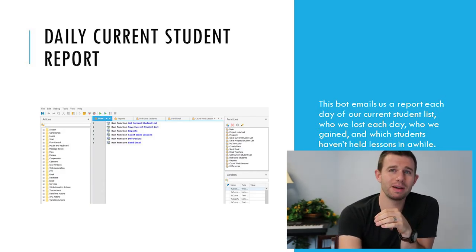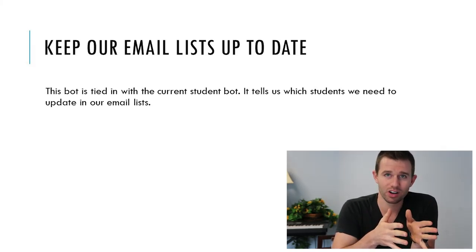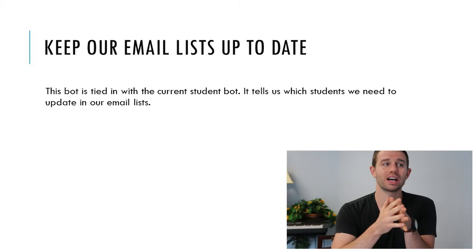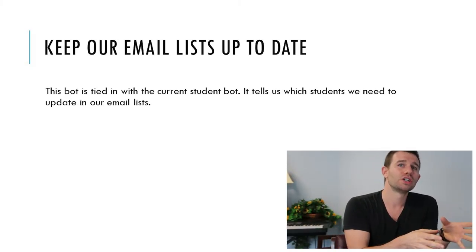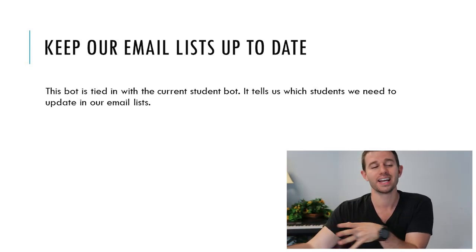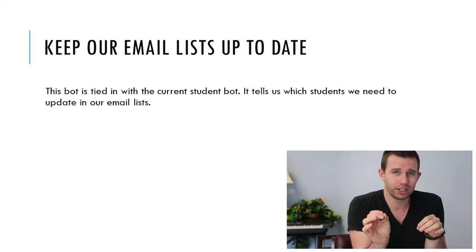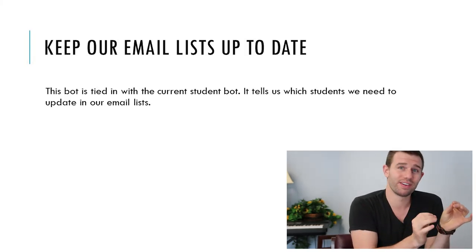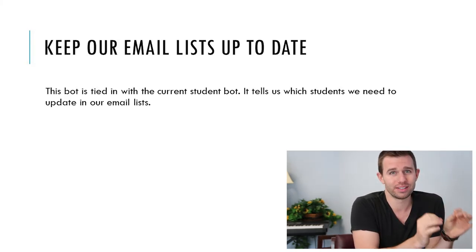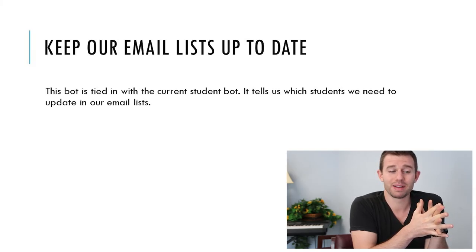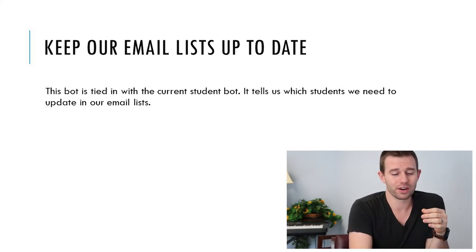Keeping your email list up to date: if you have several different software programs that might affect your email list, you don't want to have to go into all of those every single day and update your main email list. We don't use autoresponders yet, but we plan to in the future, so it's very important that on a daily basis we keep our autoresponders up to date. I would highly recommend that if you don't have a software robot doing this kind of tedious work for you, you get on top of that.